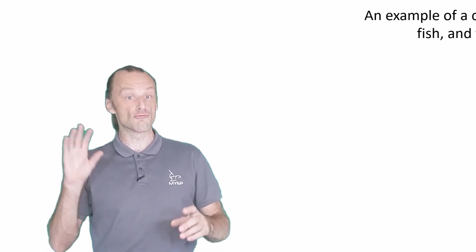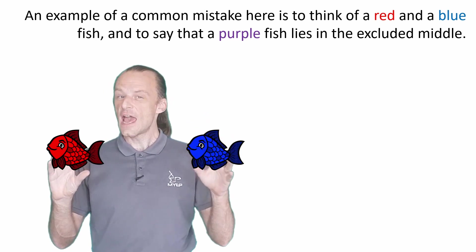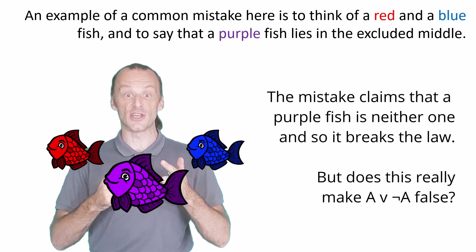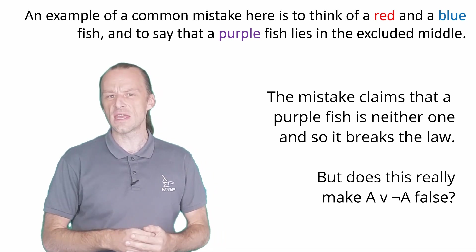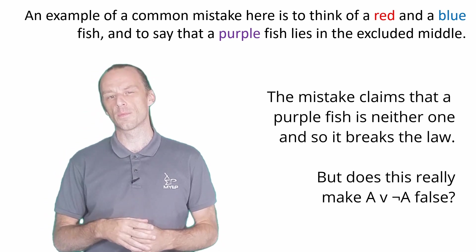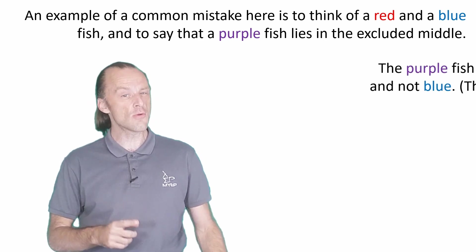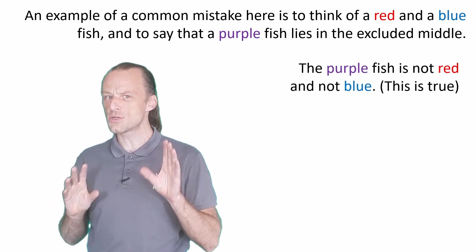One common mistake here is to think of, for example, a red fish and a blue fish, and then say that a purple fish is in the excluded middle. If you want, take a moment to think what might be wrong with this counterexample. The purple fish is not red and not blue, this is true,